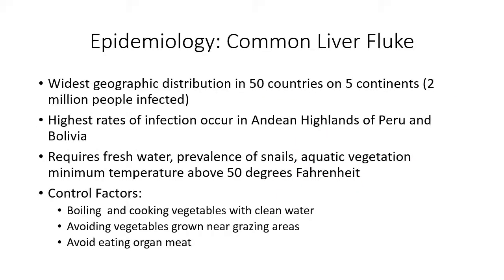The common liver fluke has the widest geographic distribution across 50 countries, but it has only affected 2 million people, mainly because it causes the most damage to livestock and agriculture. The highest rates of human infection occur in the Andean highlands of South America, particularly in Peru and Bolivia. In order to successfully reproduce, it requires fresh water, the presence of snails, and a warmer environment. Control measures include boiling and cleaning vegetables before cooking, not eating vegetables grown in pastures, and avoiding the organs of infected animal hosts — as the liver flukes can simply move from their liver to yours.